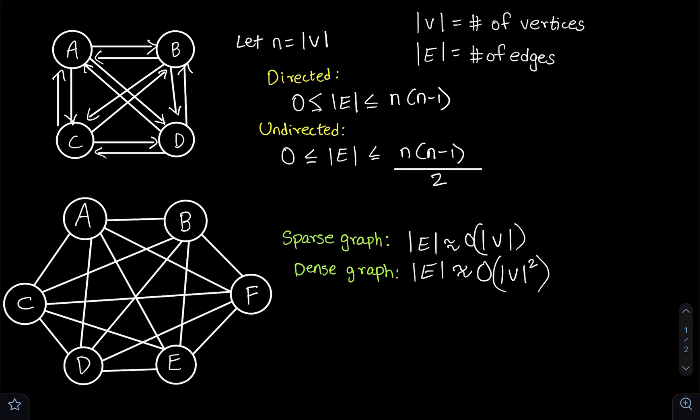the set V surrounded on both sides by vertical lines, and that is called the number of vertices. The set E surrounded on both sides by vertical lines is called the number of edges. So let's just assume that n is the number of vertices.